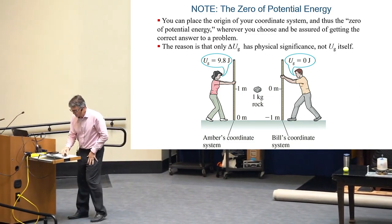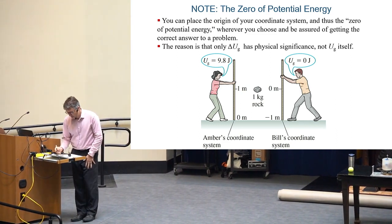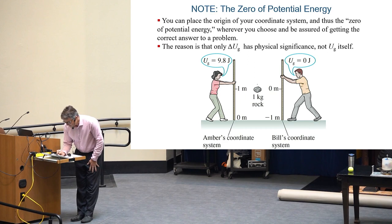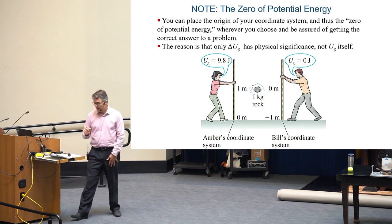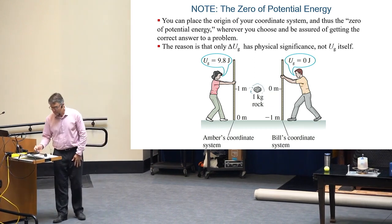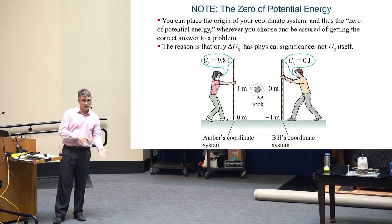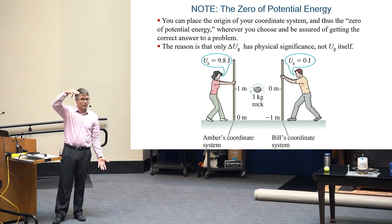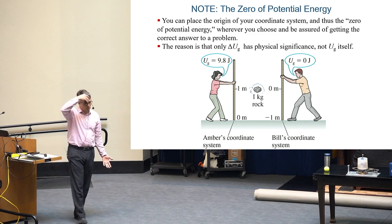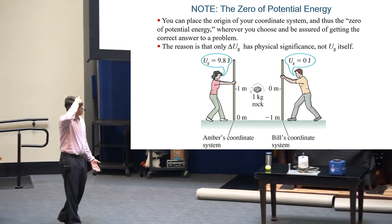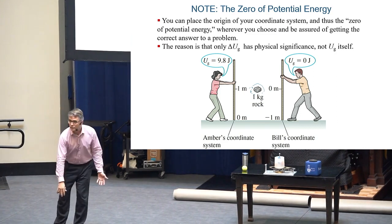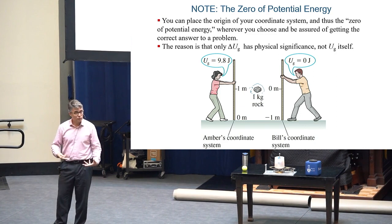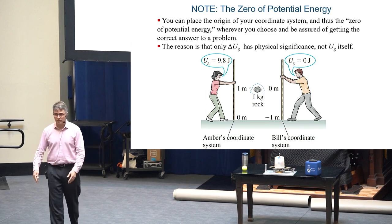So why does it work? The reason is that physically it's only the change in U_g that matters. It's not the absolute value of it. Here is a rock suspended in midair. I don't know how that's happening. But let's just imagine it's floating there. Maybe it's made of unobtainium or something. Anyway, in Amber's quite reasonable coordinate system, zero is at the floor and the rock is floating one meter above the floor. So she would say this rock has 9.8 joules of gravitational potential energy. And so it might fall. And if it was to hit the ground, then it would have zero joules of gravitational potential energy.